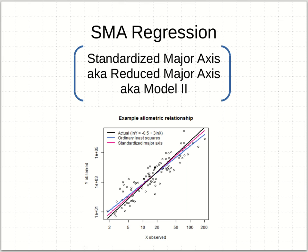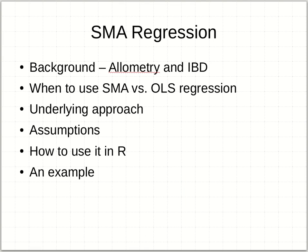I think it's important that you should see some use of SMA and be prepared to use it yourself, which I'll lay out here. I want to walk through some background where SMA regressions have been most prevalent — though that doesn't mean it's the only place they can be used. That would be in the studies of allometry and isolation by distance, a population genetics approach. I'll also try to make clear when we should be thinking about using SMA versus ordinary least squares regressions. In fact, I'm going to suggest that SMAs are probably more appropriate in many cases more often than we think.